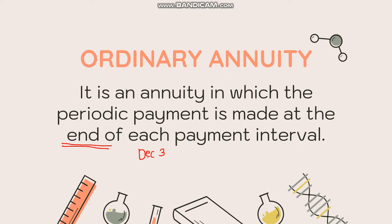Since you started on December 3, the next date is January 3 — so you will not pay anything on December 3. Your first payment will be on January 3. The key point for ordinary annuity is that you are paying at the end of each payment interval.